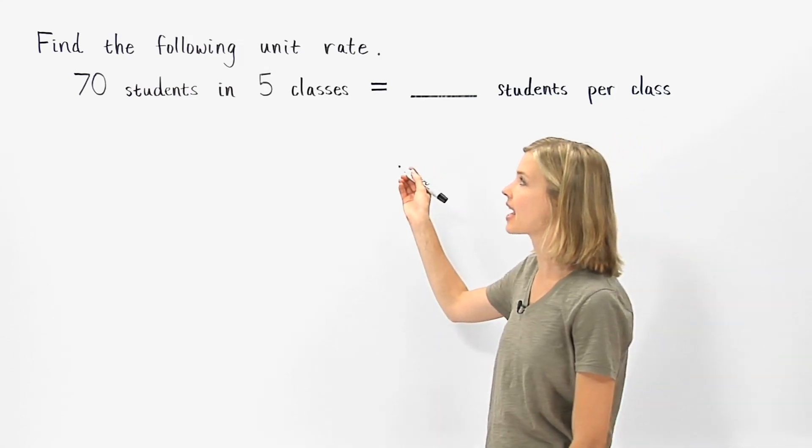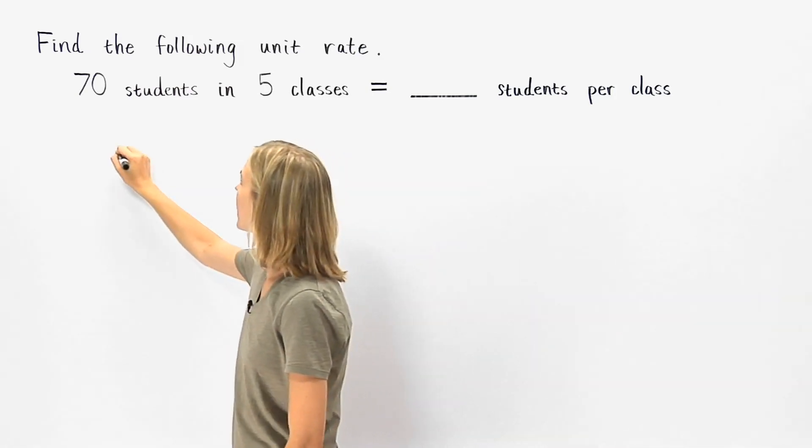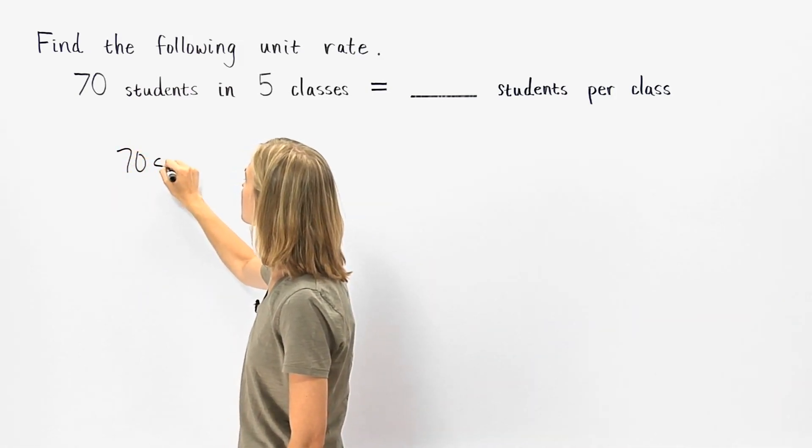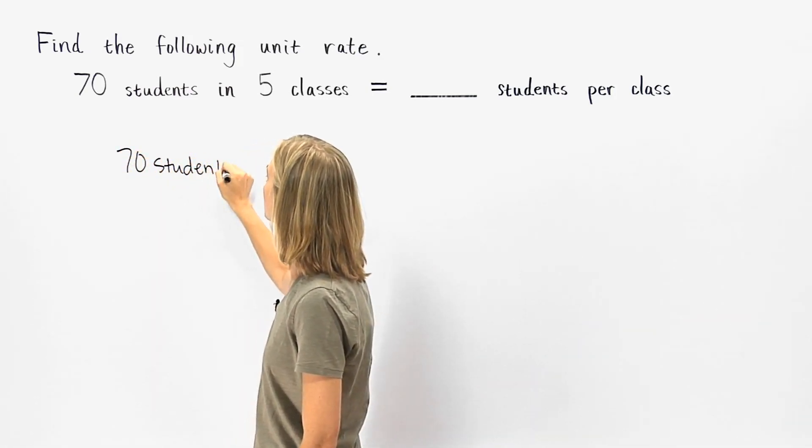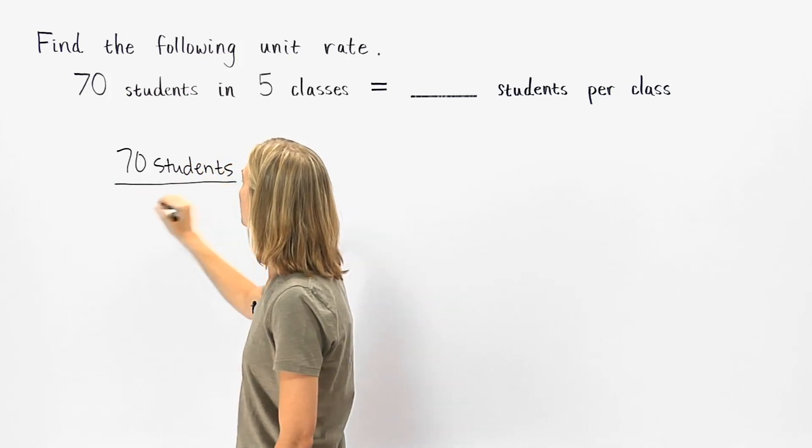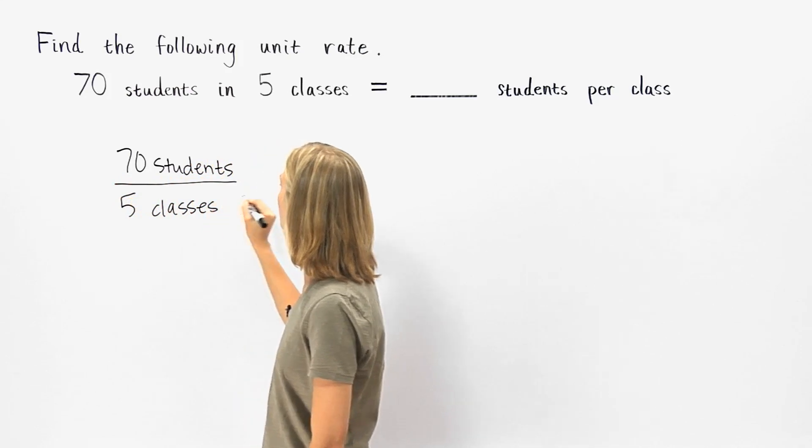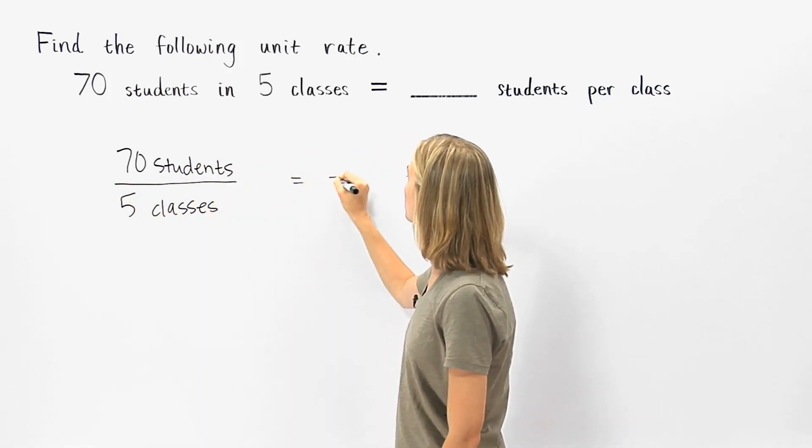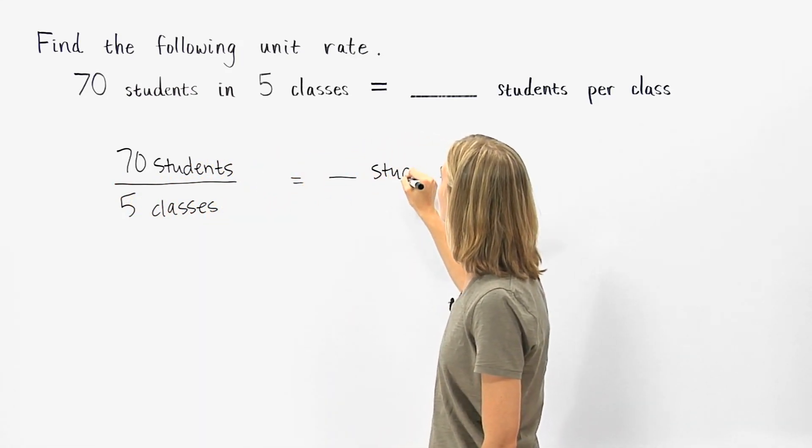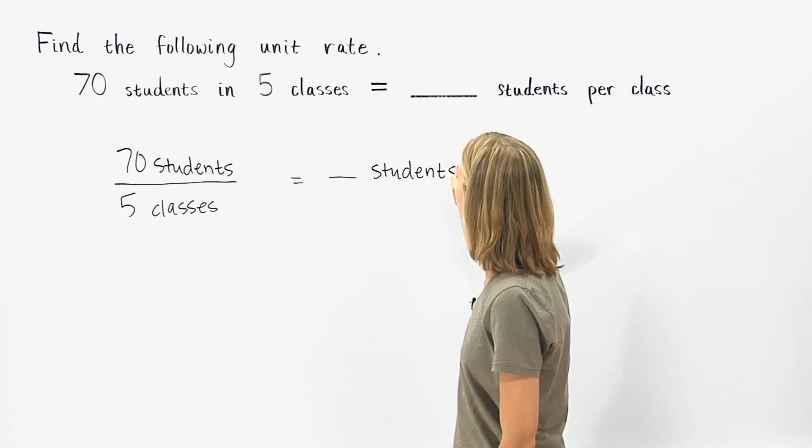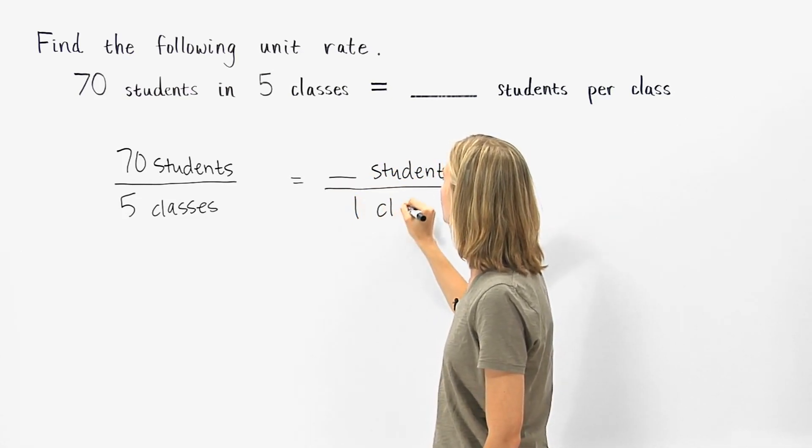So if we rewrite the given statement using fractions, we have seventy students over five classes equals blank students over one class.